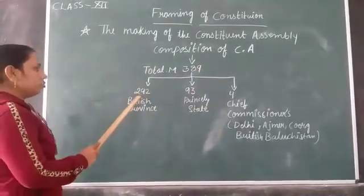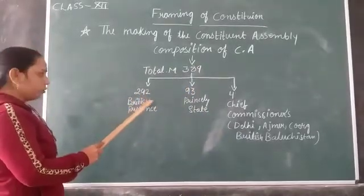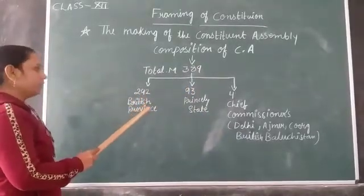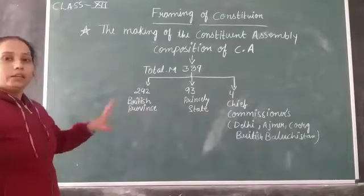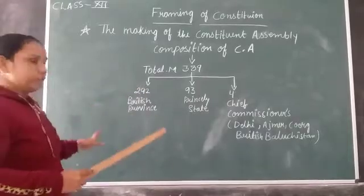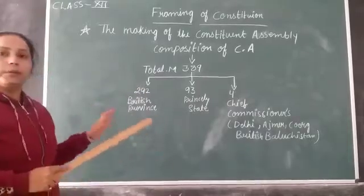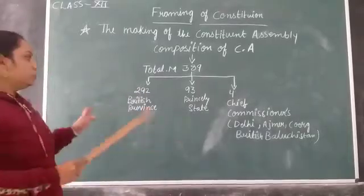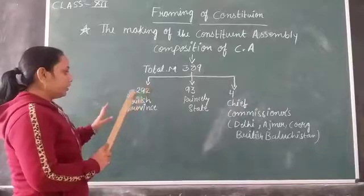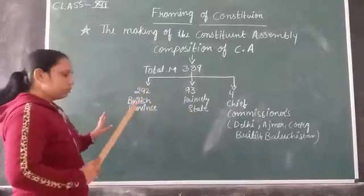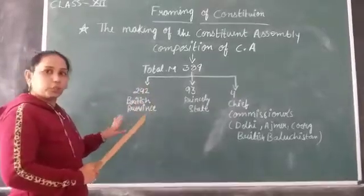You will see that 292 members were from the British provinces — that is, the areas which came under British rule at that time.